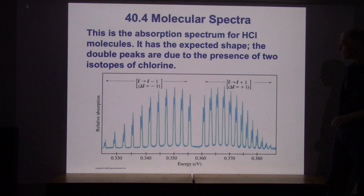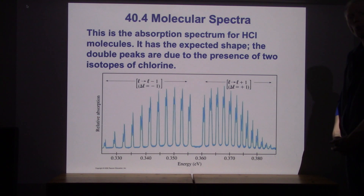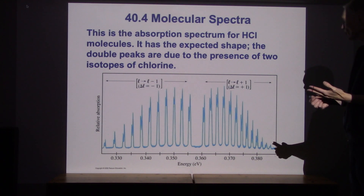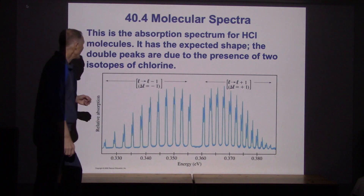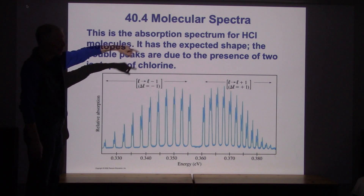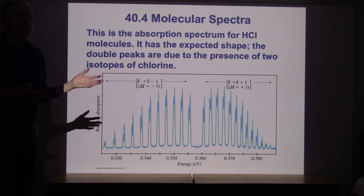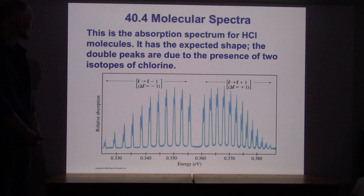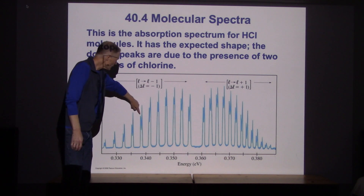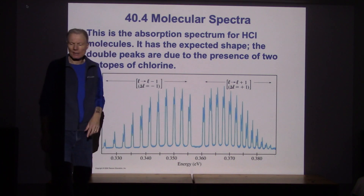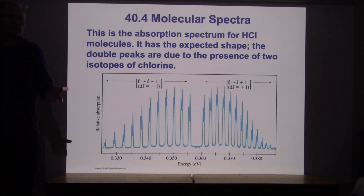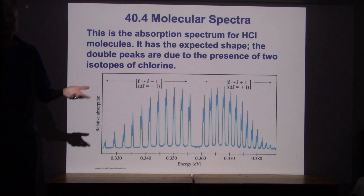Here is the absorption spectrum for HCl showing vibration and rotation — it matches the prediction for transitions between vibrational and rotational states. We also talked about isotope effects. Chlorine is an interesting example: HCl molecules show a peak due to the chlorine-35 isotope and a peak due to chlorine-37. Chlorine has two almost equally abundant isotopes, and you can see a real isotope effect — the two different isotopes have slightly different energy levels.